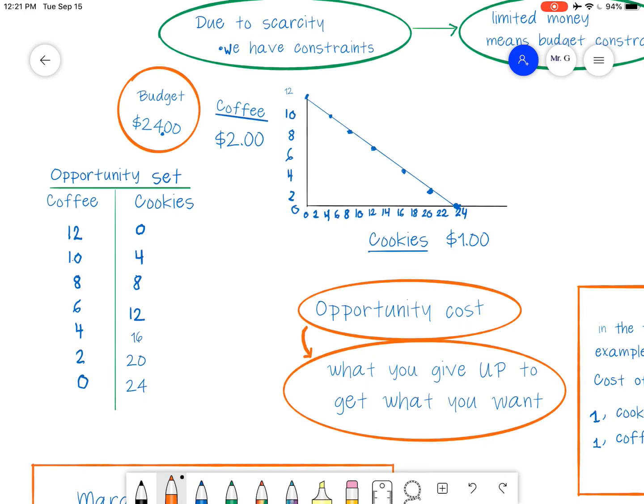Remember, this is a budget constraint. So anywhere below the line you can do, you can decide to only buy one coffee and one cookie. That's within your budget constraint. You don't spend it all. That's still possible. Remember, constraint is saying something we can't go beyond.